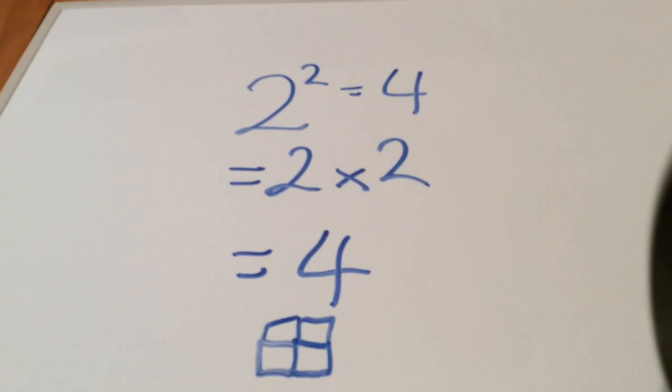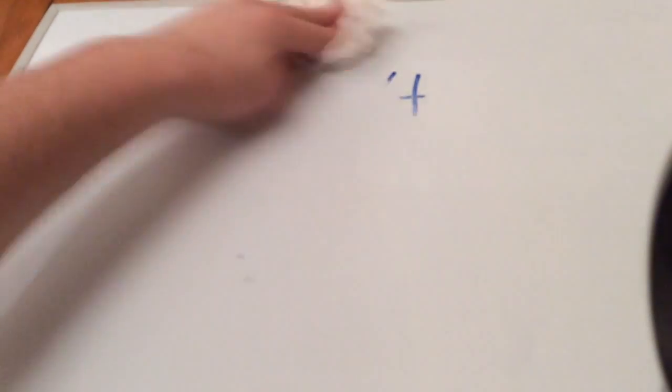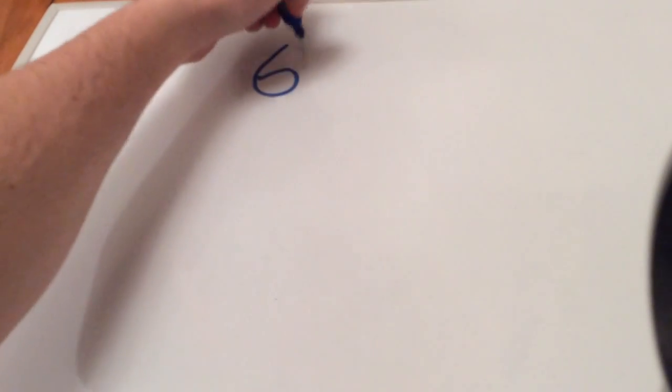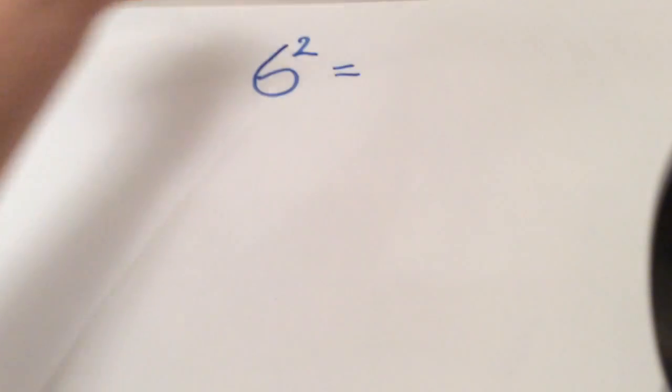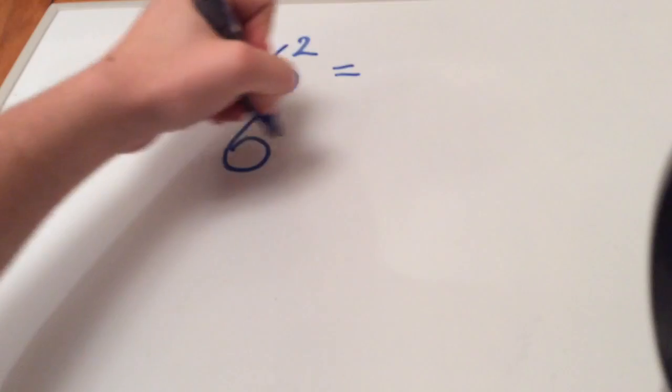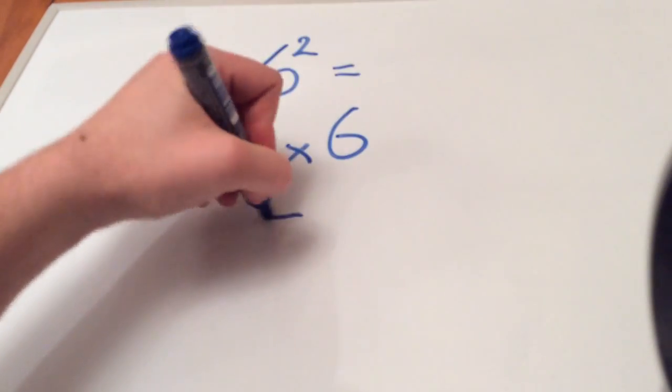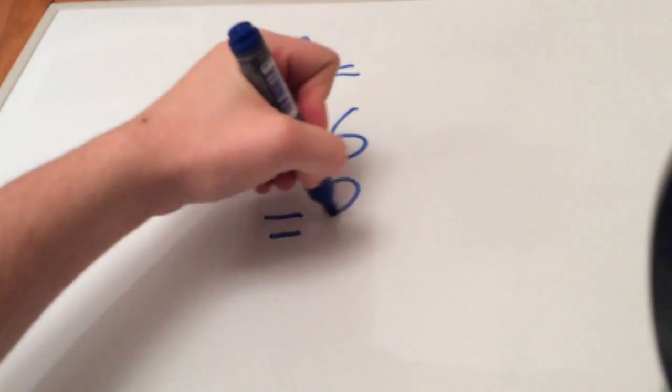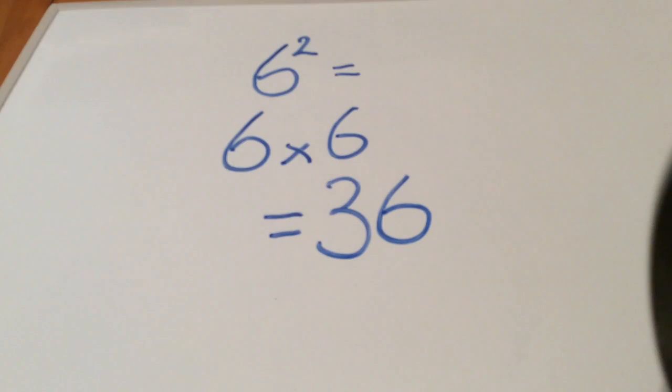So let's go for another one: 6 squared. 6 squared equals—well, 6 squared is the same as 6 times 6. If you know your 6 times table, you'll know that is 36. So that is how to work out square numbers.